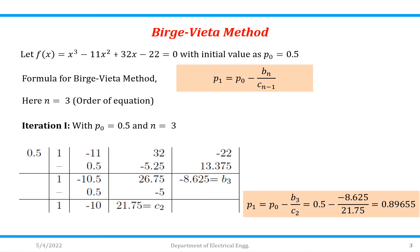So by using the formula and substituting all these values, the value of p₁ at the end of first iteration is 0.89655.